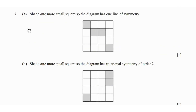Next question says shade one more small square so that the diagram has one line of symmetry. That is going to be this one over here, because the line of symmetry is this diagonal line.